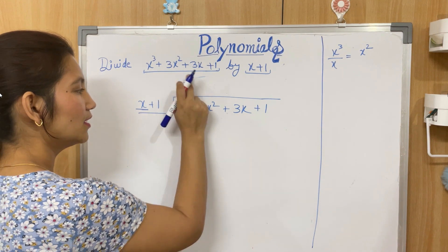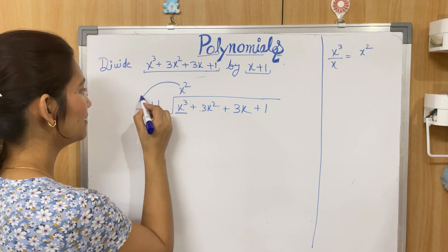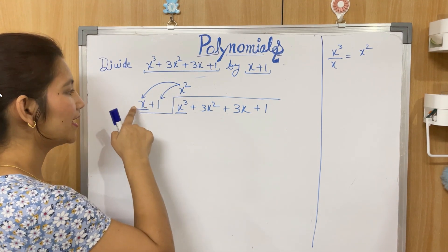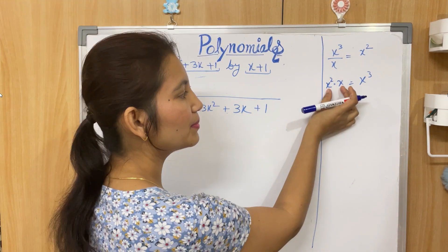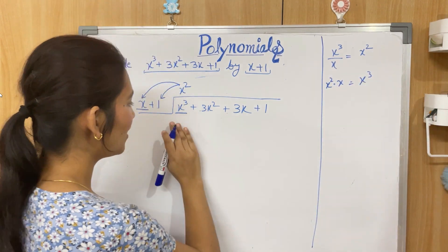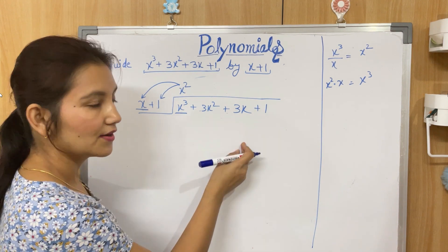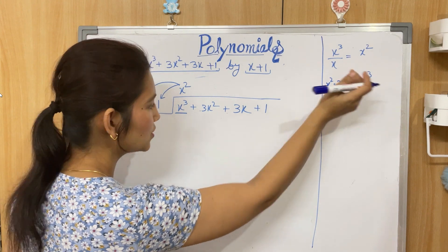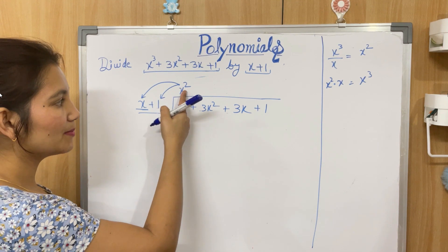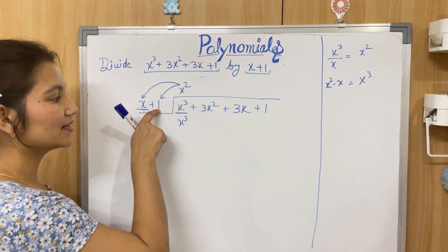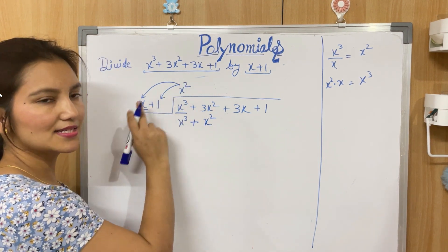Now multiply x² by each term of the divisor. x² times x gives x³ (powers add in multiplication), and x² times 1 gives x². Write x³ under x³ and x² under x², keeping like terms aligned. The sign here is plus, so we write plus x².